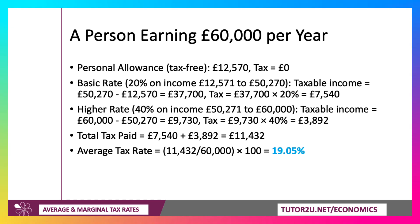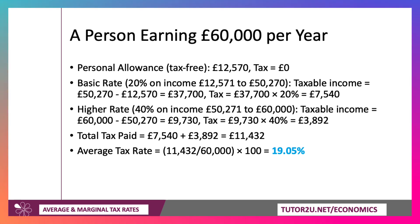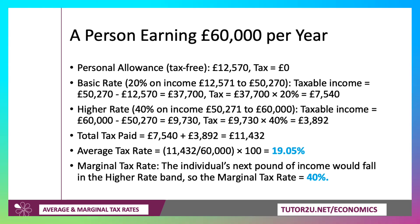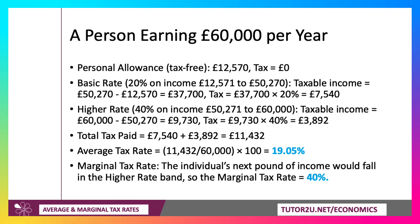Their average tax rate is 19.05% — rounding up, about 19.1%. So the person earning £40,000 faces an average tax rate of about 13%, whereas someone on £60,000 faces about 19%. Any extra income above £60,000 would be taxed at 40% — that's the marginal rate up to £125,000. I'm ignoring national insurance here, which is another direct tax on income earned.